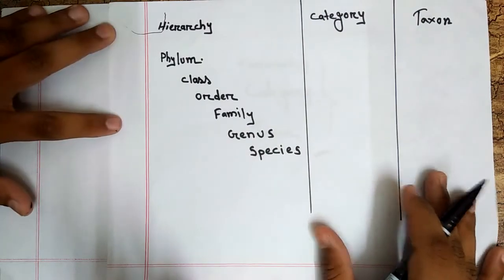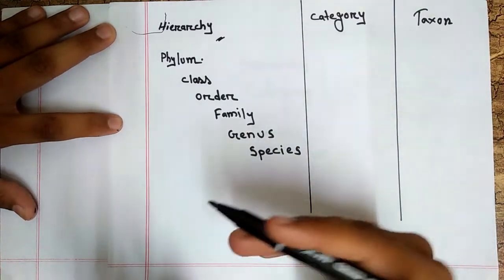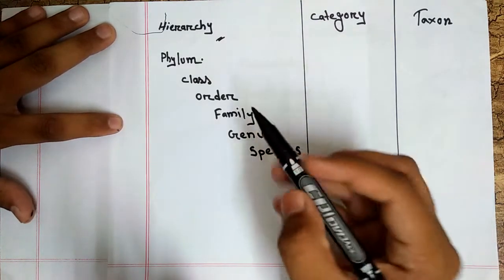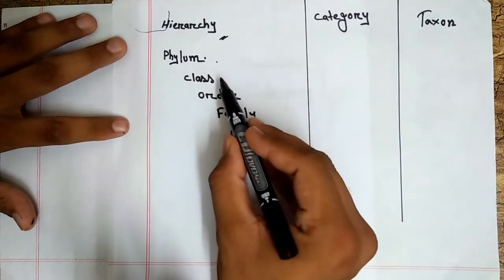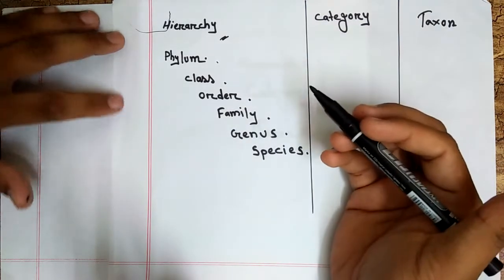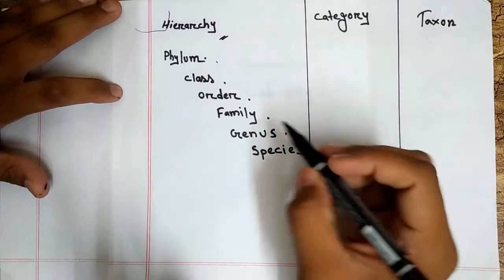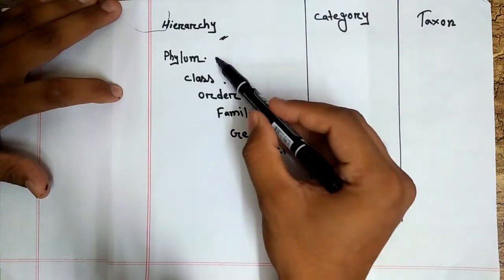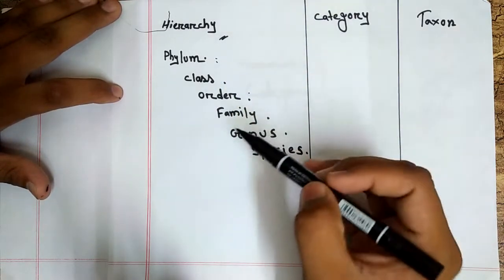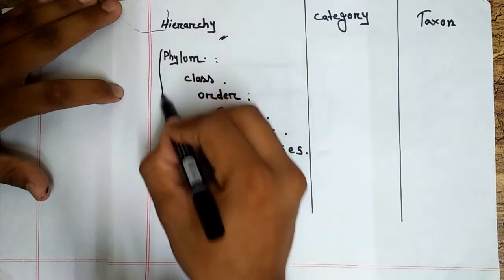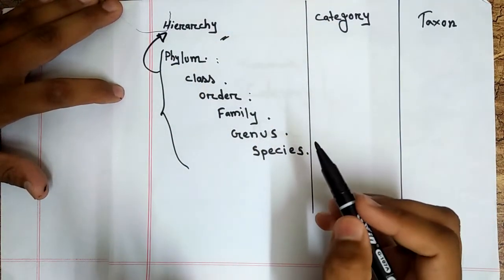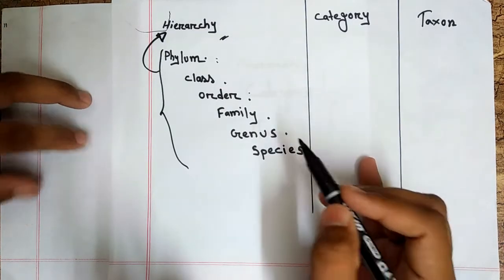First of all, let's look at hierarchy. If we want to classify any kind of animal, we have to go for a system: phylum, class, order, family, genus, species. Whatever species we like to classify, we have to classify within this framework. So phylum, class, order, family, genus, species — these six ranks together form a framework, and this framework is called hierarchy.